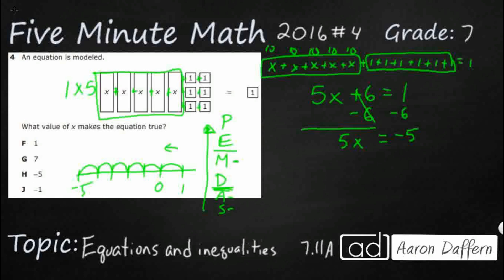Now I need to get rid of the 5 times x, so I'm going to use the inverse operation, which is division. Remember, we're moving from the bottom up. 5 divided by 5 isolates x because it equals 1. Now we've got negative 5 divided by 5. Just like 5 divided by 5 is 1, since we have a negative, x is going to equal negative 1. We're going to need all those negatives to cancel out all of those positives. So our answer here is J.